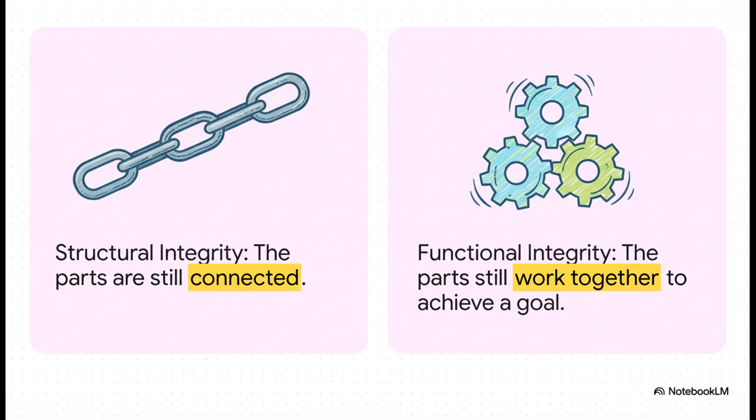Structural integrity just means the pieces are still physically connected. But functional integrity, the thing that actually matters, means the pieces can still work together to do their job. A system can look perfectly fine on the outside but be functionally useless.